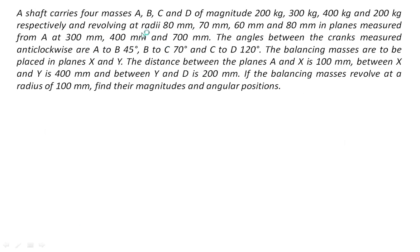Let us go to the statement of the problem. A shaft carries four masses A, B, C and D of magnitude 200 kg, 300 kg, 400 kg and 200 kg respectively, and revolving at radii 80 mm, 70 mm, 60 mm and 80 mm in planes measured from A at 300 mm, 400 mm and 700 mm. The angles between the cranks measured anti-clockwise are A to B 45 degrees, B to C 70 degrees and C to D 120 degrees.